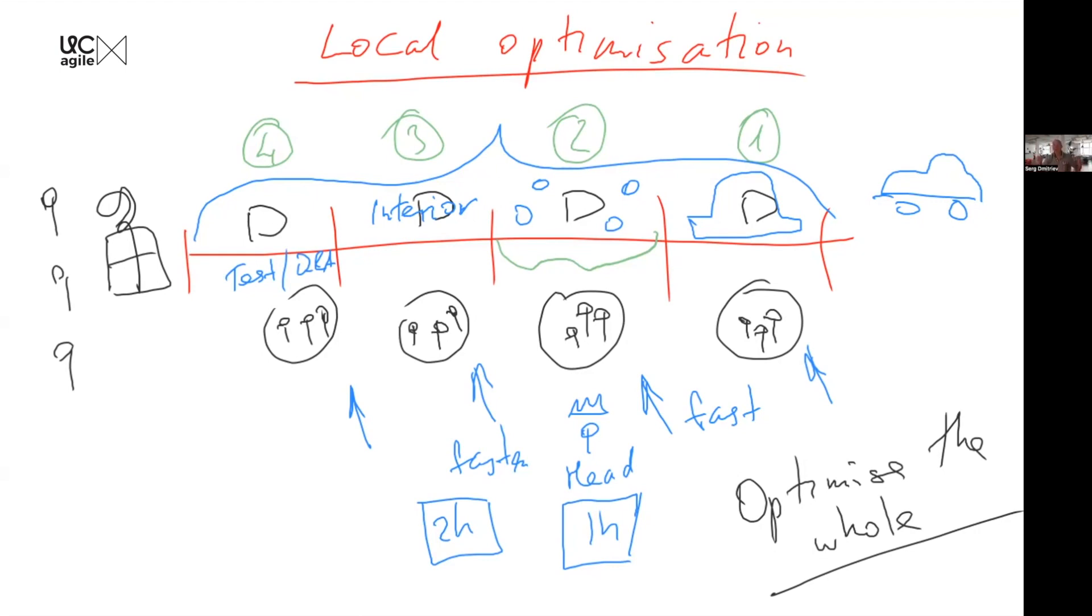So the message here: you should always have someone who has a bigger picture, someone who watches how changes are benefiting the end result rather than a local part of the result. And usually these things are tied to compensation and bonuses, and we need to solve those type of problems very often.